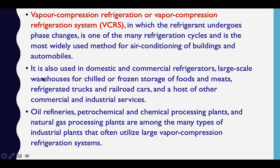Large-scale warehouses — big godowns where everything is air conditioned — also use these systems. Oil refineries, petrochemical and chemical processing plants, and natural gas processing plants are among the many industrial plants that utilize large vapor compression refrigeration systems.